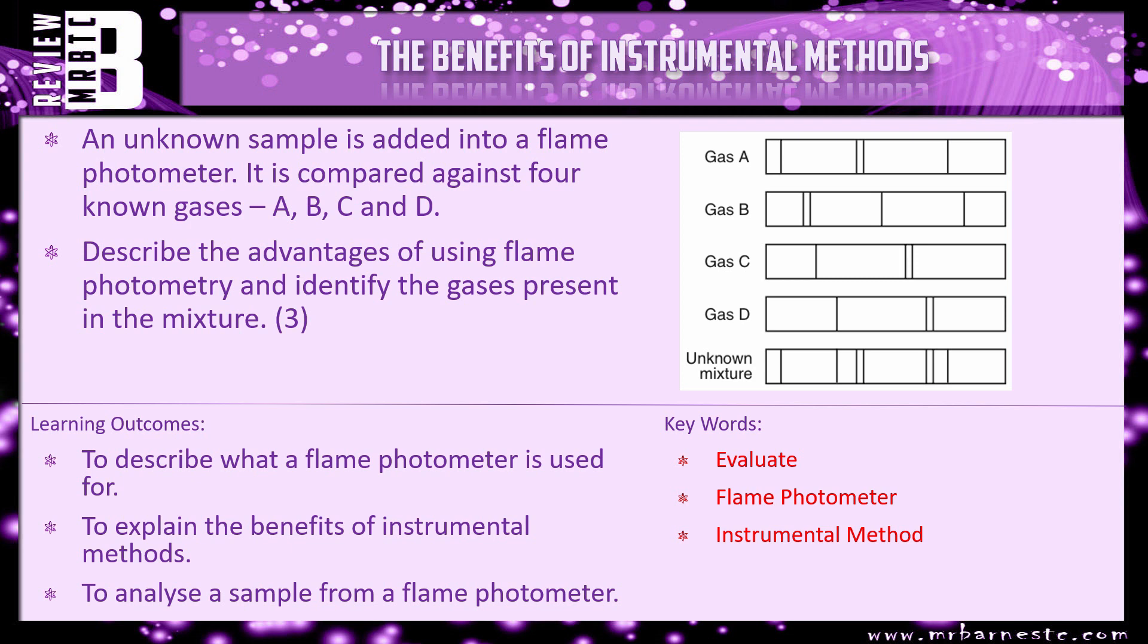It's compared against four known gases, A, B, C and D. So the question is, describe the advantages of using a flame photometry and identify the gases present in the mixture. So have a look at the unknown mixture, which two gases out of A, B, C and D are present in that mixture.